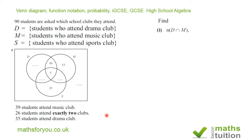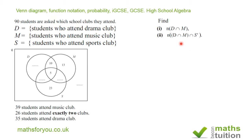Moving on, it says find N of D intersection M — so we want the number of students who are in D intersection M. Secondly, we want to find the number of students in D intersection M intersection S prime (not S). Note the internal bracket and also the external bracket.